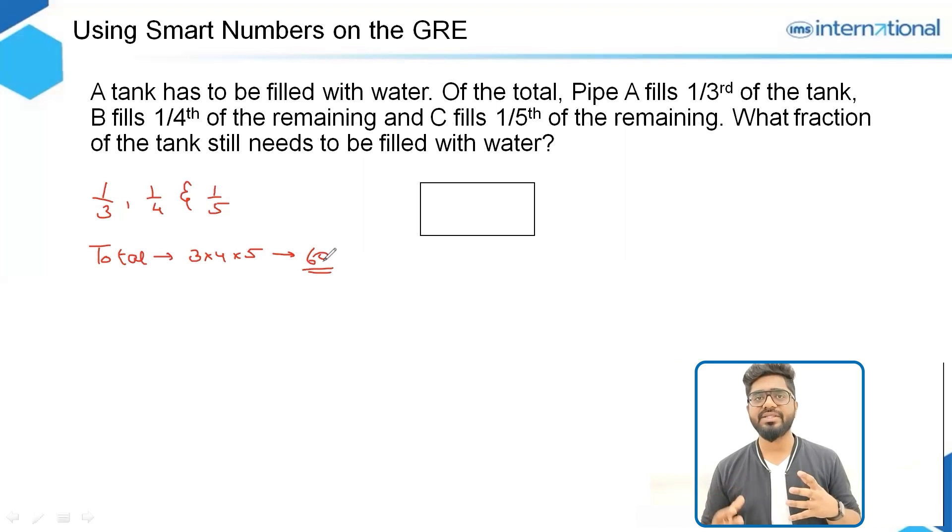Now 60 might seem to be an odd number or a weird number at first, because who takes the total as 60? But let's see how it makes the work easier. A equals 1/3 of 60, which equals 20. Now see, we are dealing with integers, and it is better to deal with integers than dealing with fractions because we tend to make mistakes when dealing with fractions.